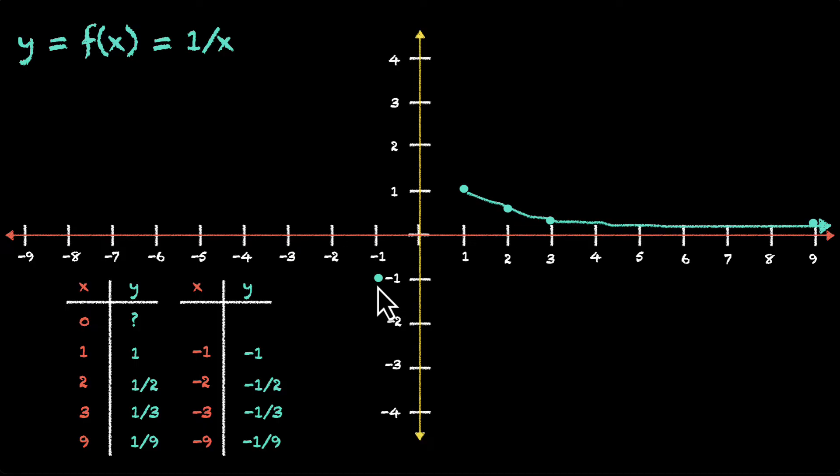For minus 1, we have minus 1. For minus 2, we have minus half. For minus 3, we have minus 1 by 3. And for minus 9, we have minus 1 by 9. Very similar to this graph. Okay. So this is what we have for negative values. No matter how much we go in this direction, this curve will never cross the x-axis.